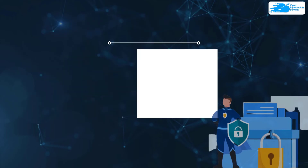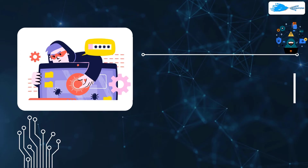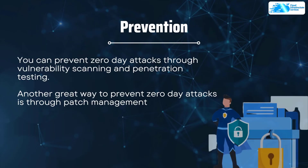Number twelve is the zero-day attack. A hacker exploits a vulnerability in software before the vendor or developer can address it and launch patches. To prevent zero-day attacks, perform vulnerability scanning and penetration testing. Another great prevention method is patch management — as soon as a vulnerability is found, patch it immediately.